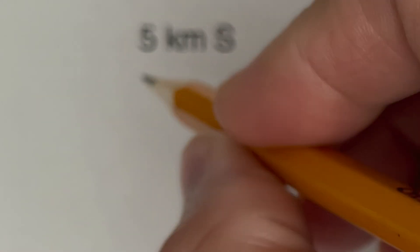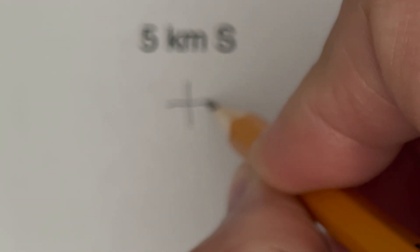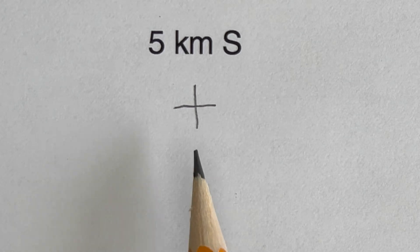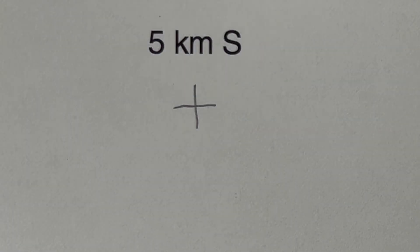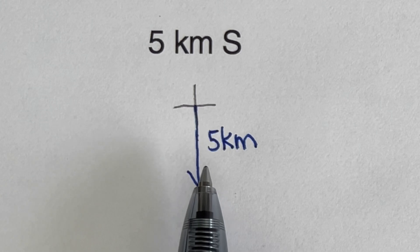Let's take the first one. It says five kilometers south. First thing we're going to do is draw the direction guide. It says south, so south is going downward. This line right here is going to represent five kilometers and it is directed south. This is how we represent five kilometers south.